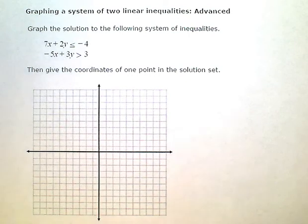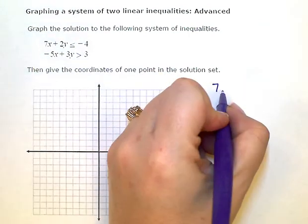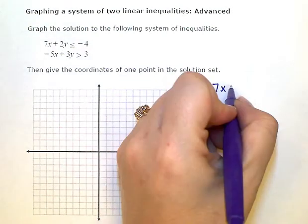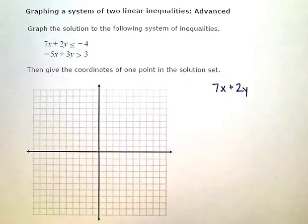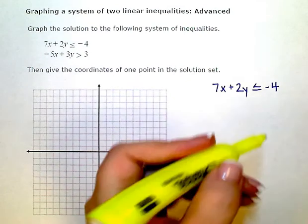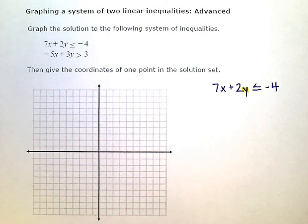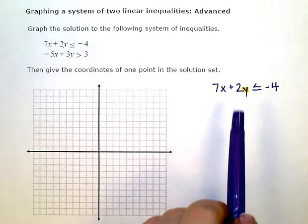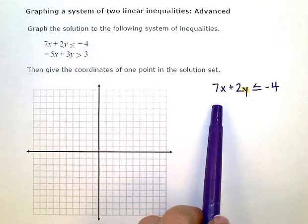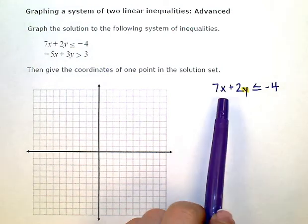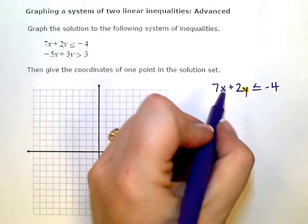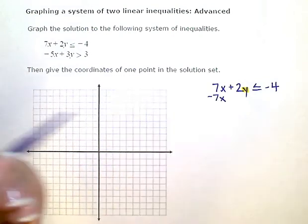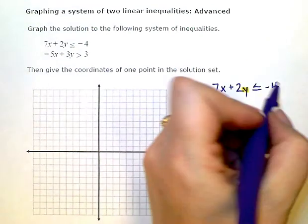So I'm going to start with the top one. 7x plus 2y is less than or equal to negative 4. The first thing I need to do if I'm trying to isolate the y or get the y by itself is I need to get rid of any other terms that are on the left over here where the y is. So I'm going to zero out or get rid of this 7x term by subtracting it. And then I need to do the same thing on the other side.